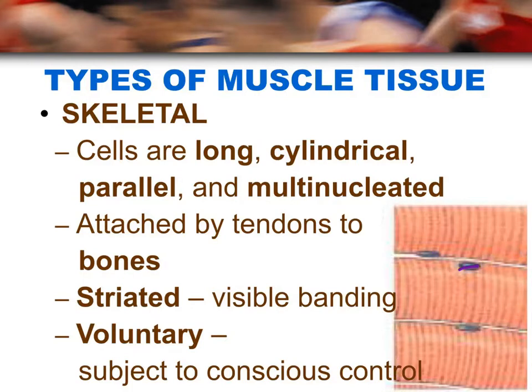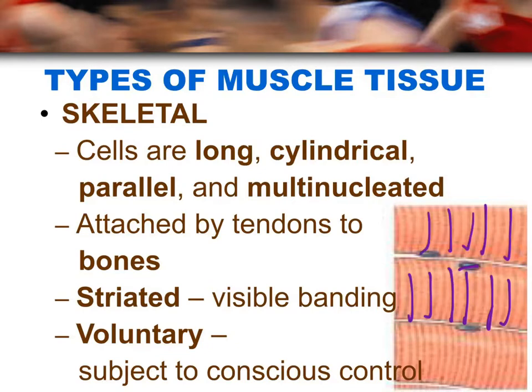Skeletal muscles are striated, which means they have light and dark bands, or stripes — those are your striations. And skeletal muscles are voluntary, which means you can actually control them.